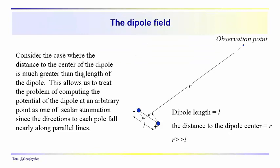When we develop the expression for the dipole field, we'll calculate the potential first and then take the derivative. As we do this, we assume that our observation point is at a distance R which is much, much greater than the length of the dipole — the distance separating the two poles. So the distance from the observation point to the center of the dipole, R, is a lot greater than the separation L.